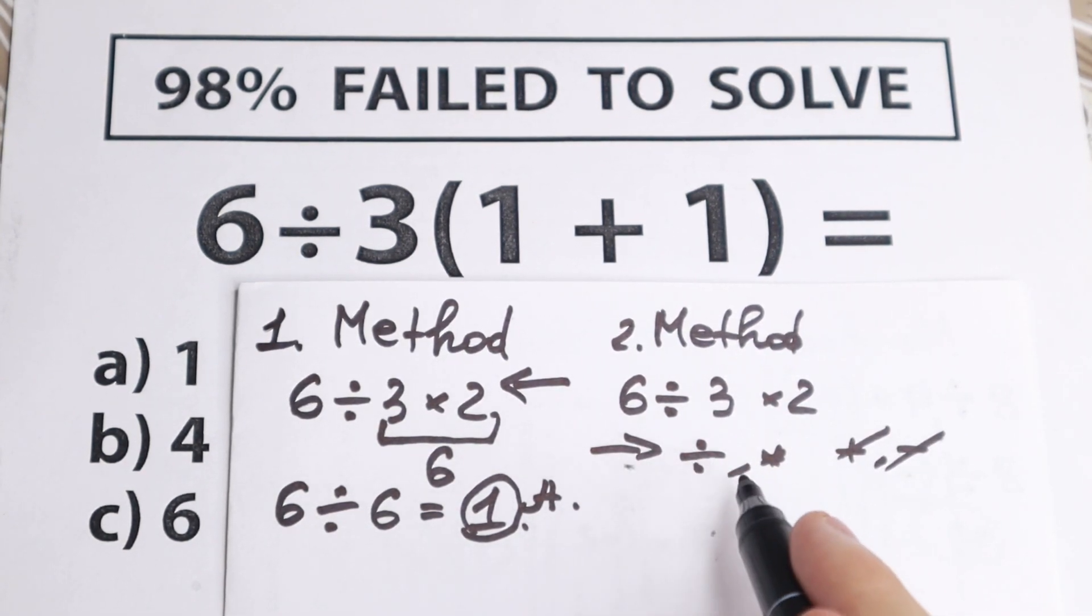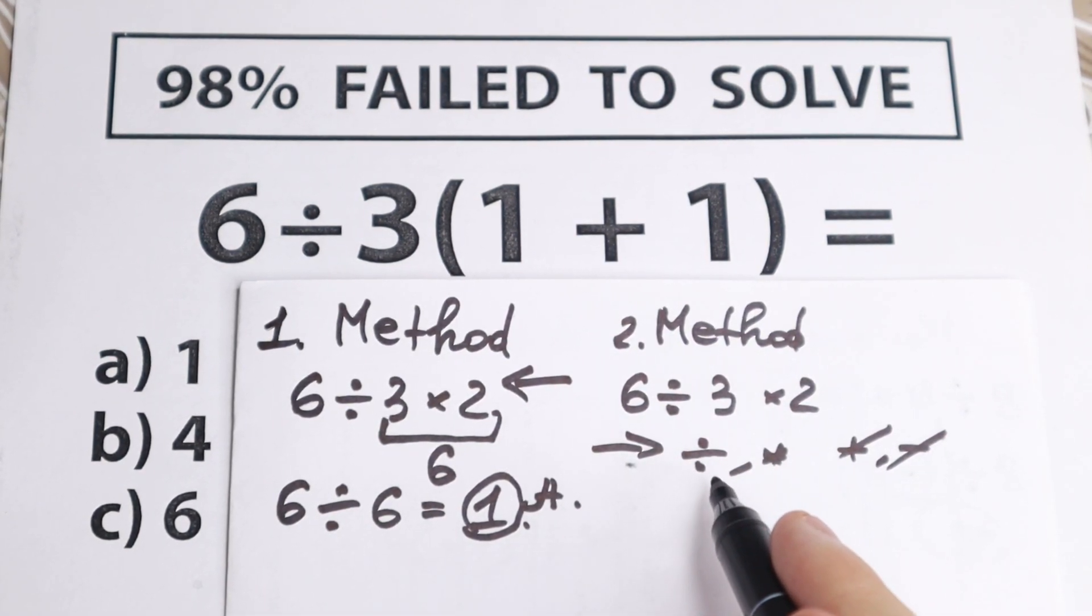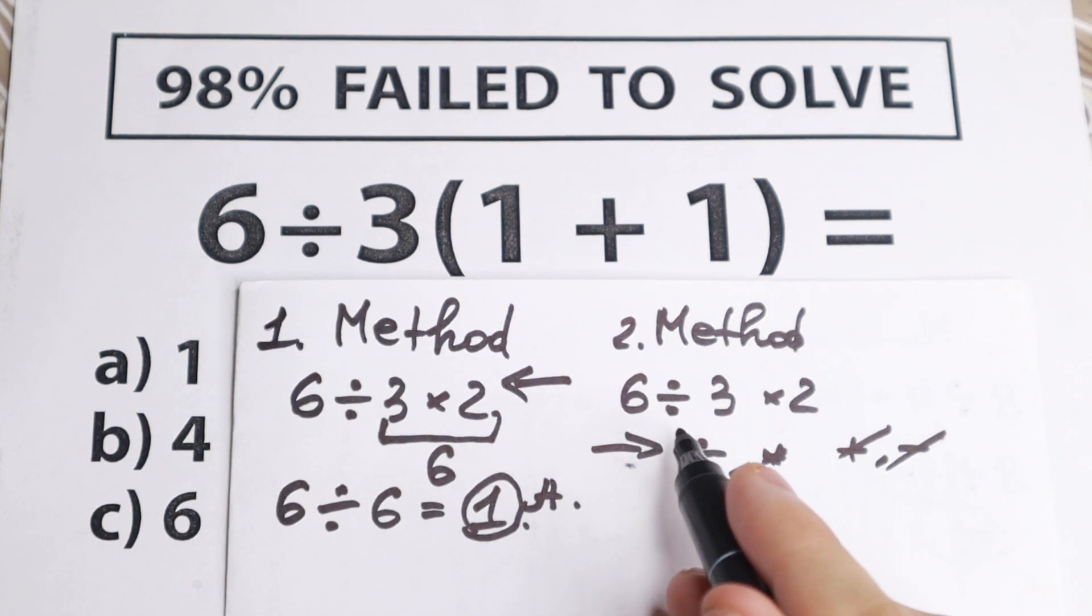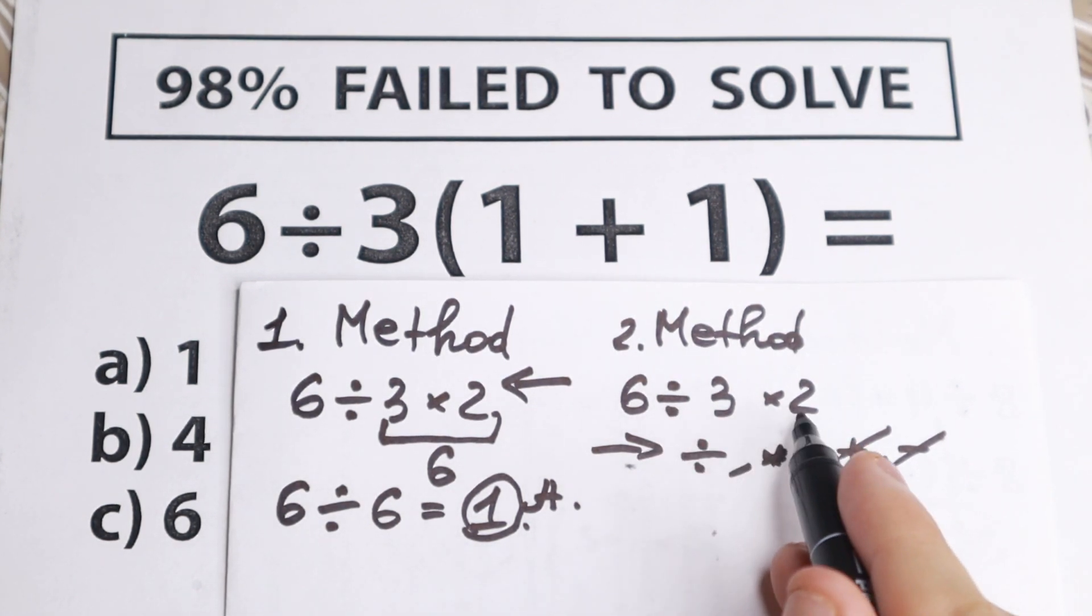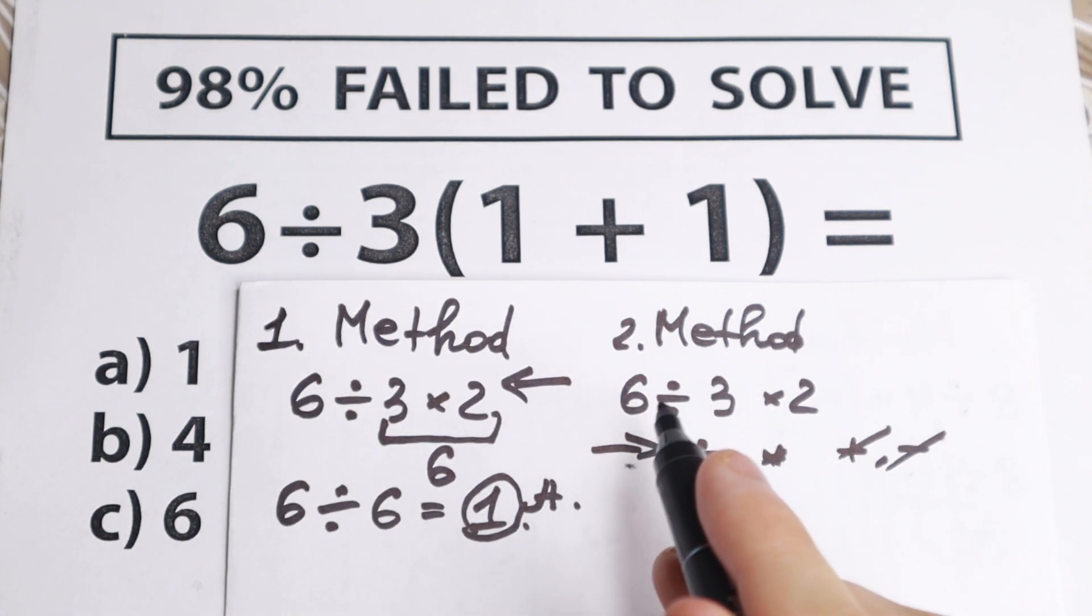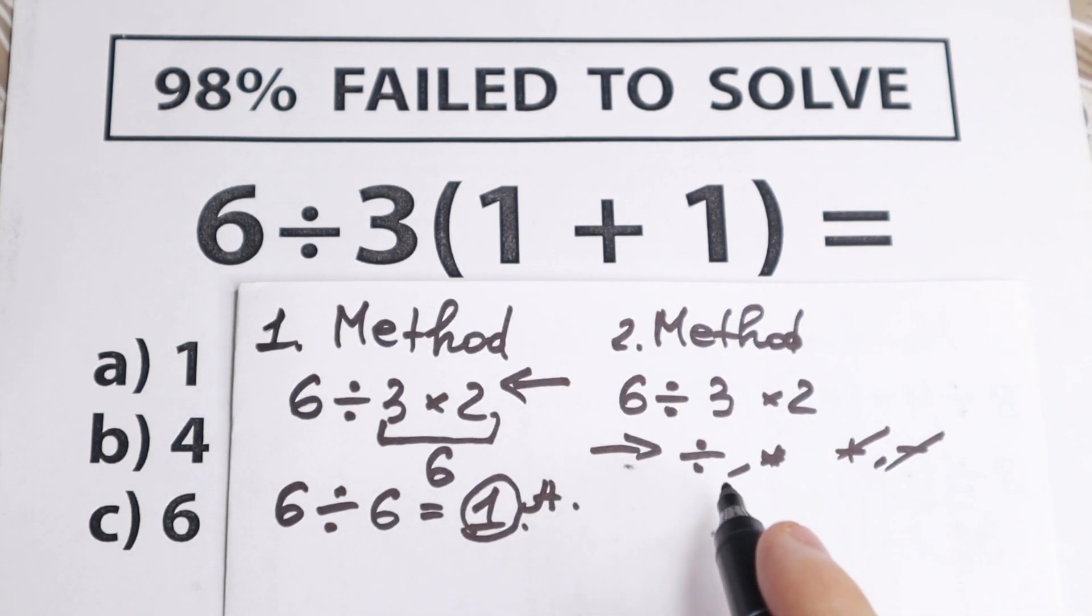Doesn't matter, multiplication and division, we still go right here. If right here we have multiplication, division, division, multiplication, doesn't matter, we still have division, multiplication, we go from left to right.